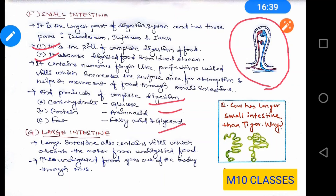Coming to the last part — the large intestine. After ingestion, digestion, absorption, and assimilation are complete, the last step is excretion. The undigested food from the small intestine enters the large intestine, where villi are also present but their function is to absorb water from the undigested food. Finally, the undigested food comes out through the anus via a sphincter muscle, completing the process of excretion. This completes the total process of nutrition in the human digestive system.